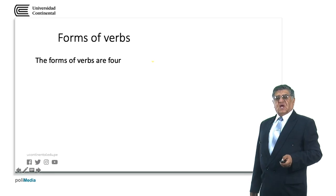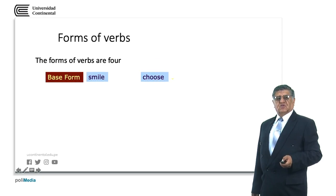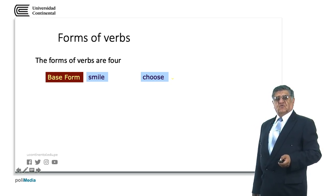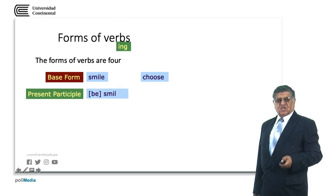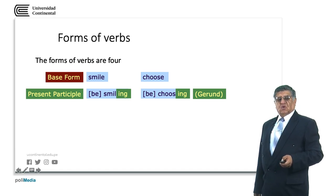To generalize, verbs in English have four forms: the base form, the simple form, or the infinitive — for example, smile or choose. The present participle is the -ing form: smiling, choosing.